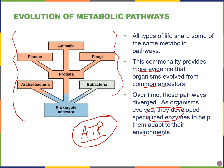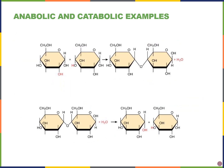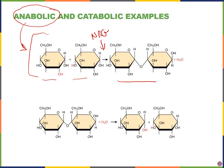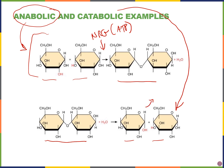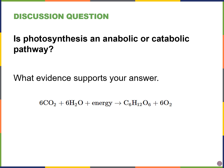Here are two types of chemical reactions. At the top, two smaller molecules are linked together to form a larger one — that's building, so that's anabolic. Building larger molecules requires energy input, usually in the form of ATP. The bottom one shows a larger molecule breaking down into two smaller subunits — that's a catabolic reaction — and energy is released, usually captured in the form of ATP.